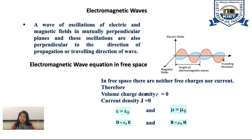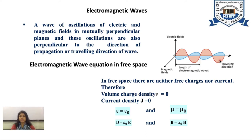Electric field changes with time and produces magnetic field. Magnetic field changes with time and produces electric field. Both fields are coupled with each other and produce a wave known as Electromagnetic Wave, in which the electric field vector, magnetic field vector, and direction of propagation vector are all perpendicular to each other.